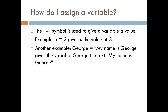How do you assign a variable? The equals symbol is used to give a value to a variable. In the example x equals 3, you are giving the variable x the value of 3. And in a different example, George equals 'my name is George' — you are giving the variable George the text 'my name is George.'